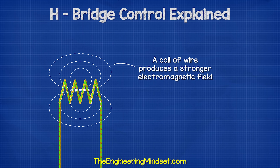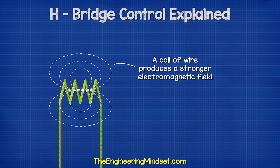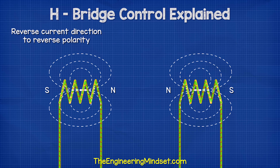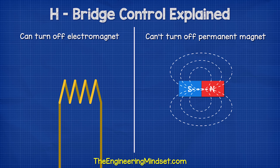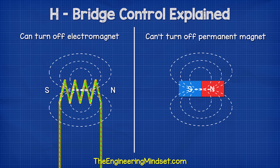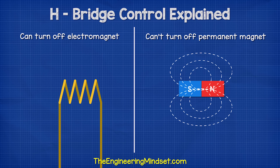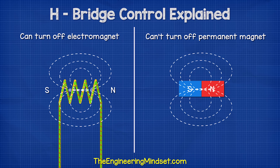If we wrap the wire into a coil, it creates a larger, stronger electromagnetic field with a north and south pole. We reverse the polarity by changing the direction of current. We can turn the magnetic field of the coil on and off by simply allowing or stopping the flow of current. But the magnetic field of a permanent magnet is always on.